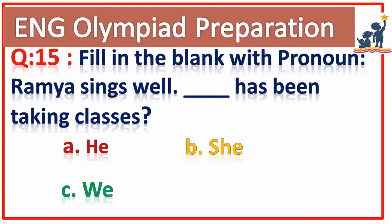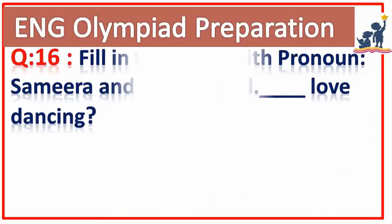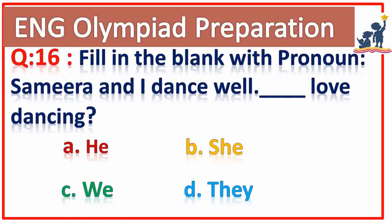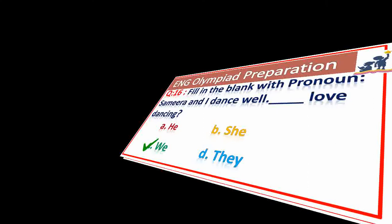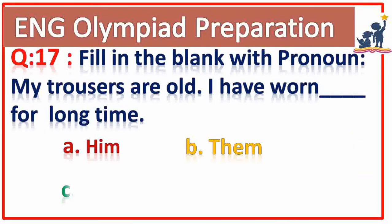Question number fifteen: fill in the blank with a pronoun. Ramya sings well — dash has been taking classes. She. Question number sixteen: fill in the blank with a pronoun. Samira and I dance well — dash love dancing. We love dancing. Good. Question number seventeen: fill in the blank with a pronoun. My trousers are old — I have worn dash for a long time. Option D — them. Very good.